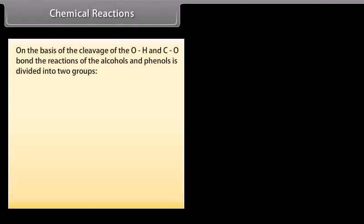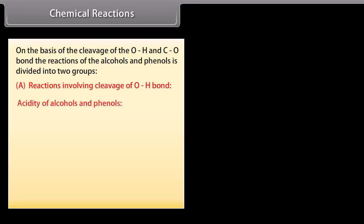On the basis of the cleavage of the OH and CO bond, the reactions of the alcohols and phenols are divided into two groups: reactions involving cleavage of OH bond, and reactions involving cleavage of CO bond. The first group includes acidity of alcohols and phenols, and reaction with metals.